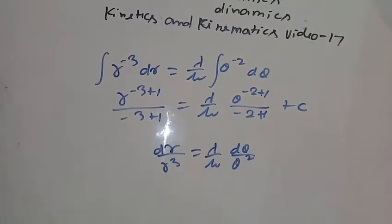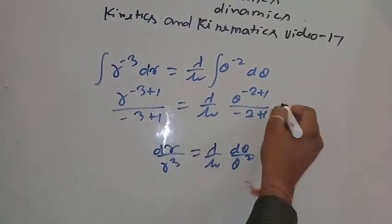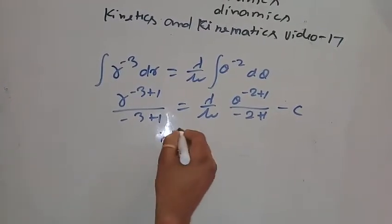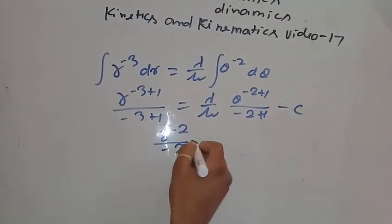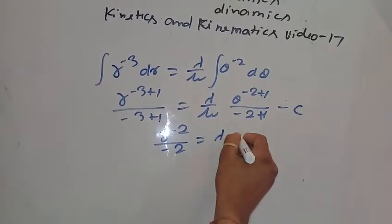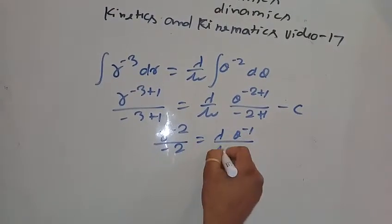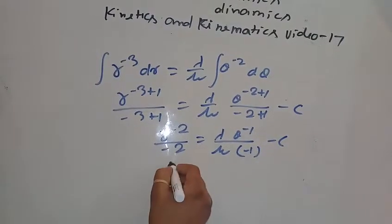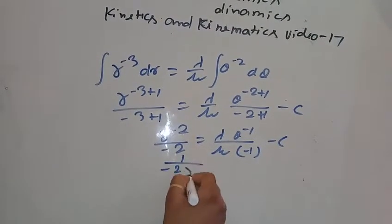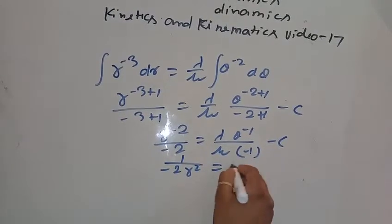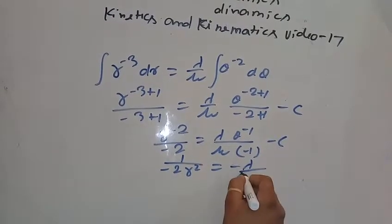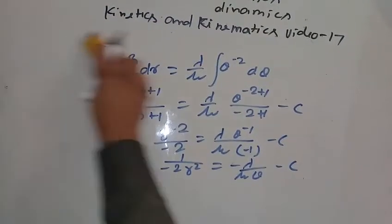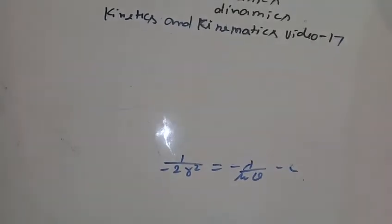Integrating on both sides: r to the minus 2 over minus 2 equals lambda upon mu times theta to the minus 1 over minus 1 plus c. Taking minus common from both sides, minus 1 by 2r squared equals minus lambda upon mu theta minus c.